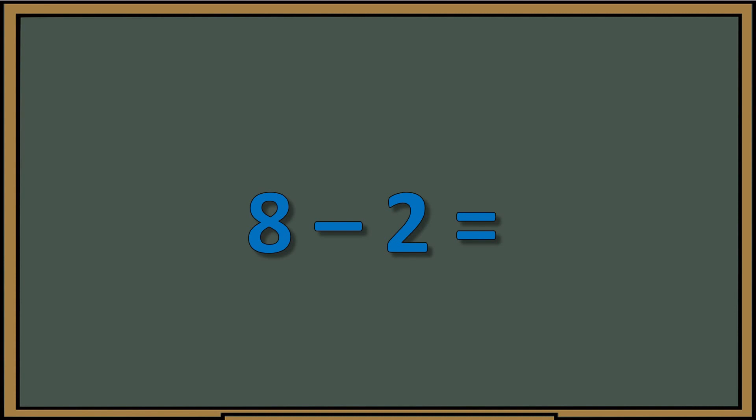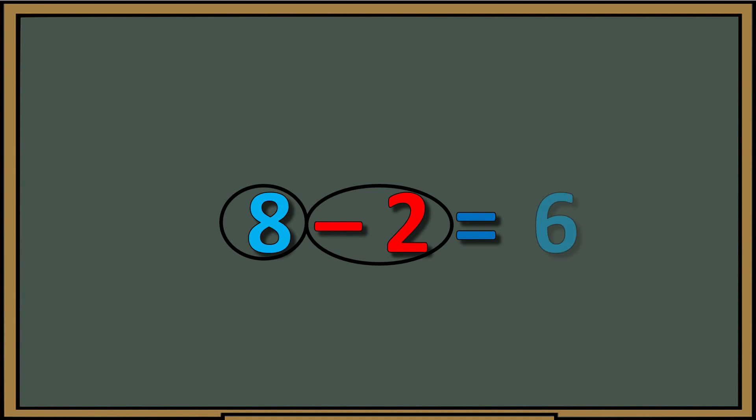We have eight minus two. Same strategy: circle the number with the sign in front, circle the number with the sign in front. We have eight good guys and two bad guys. The good guys are going to win but we need to subtract them — eight minus two is positive six.